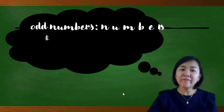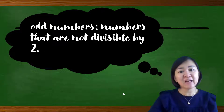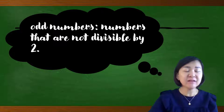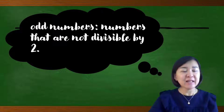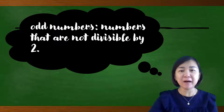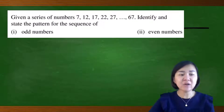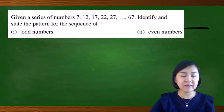Odd numbers are numbers that are not divisible by 2. For example, 1, 3, 5, 7, and so on — these are numbers that cannot be divided by 2 completely. Now let's look at the questions from the textbook.